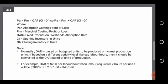Normally the overhead absorption rate is based on budgeted units to be produced or normal production units. If based on a different activity level, for example labor hours, you would have an overhead absorption rate of, say, $40 or $200 per labor hour. To get the dollars per unit, you need to know how many hours of labor are required for a single unit, then multiply to get the dollars per unit.